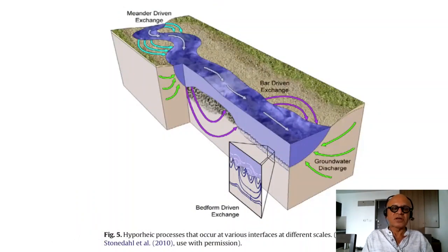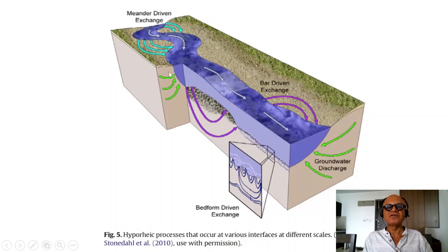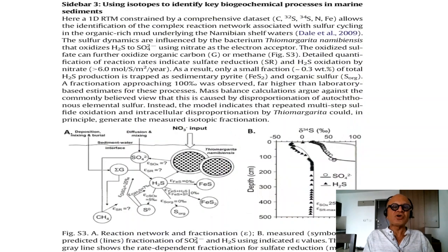Another important process for carbon cycling and weathering rates is chemical weathering by chewing into rocks and soils, happening at different interfaces and at different scales. Here you have meander-driven exchange with groundwater, bar-driven exchange, and bed-form-driven exchange. You can see the groundwater interactions in schematic form — evolution of geological features, hyporheic processes, biogeochemistry, and the carbon cycle all go hand in hand.